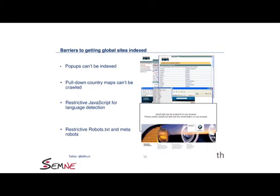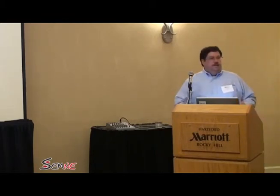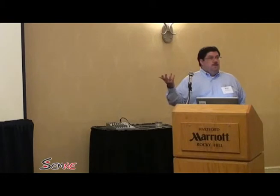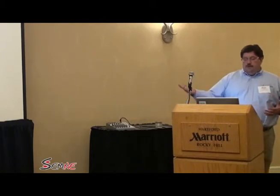Common things we see — this is Cisco, and they should know better. Pop-ups: all their country pages weren't able to get indexed. Pull-down country maps — we can do this right, but at IBM they weren't doing it right. It was a JavaScript with no script tags, so we couldn't get into the country pages. Next was restricted JavaScript, which puts up a message saying go back and update your browser. None of the engines will accept JavaScript, so every one of those pages gets bounced out — going from 10 million pages to zero pages very quickly.